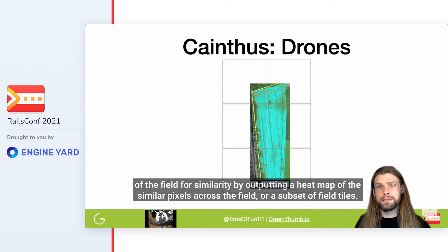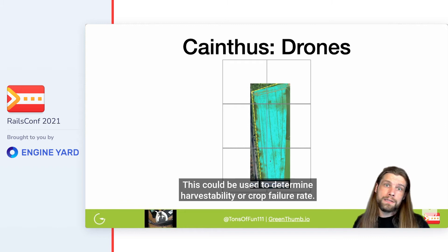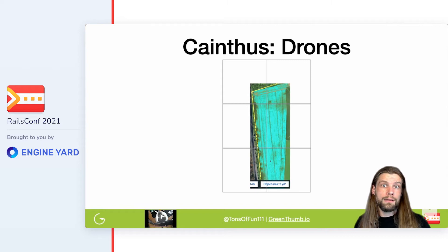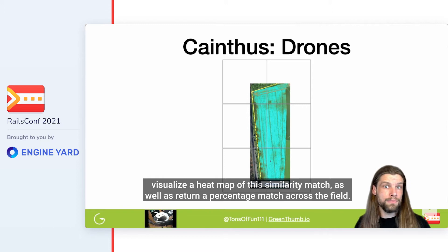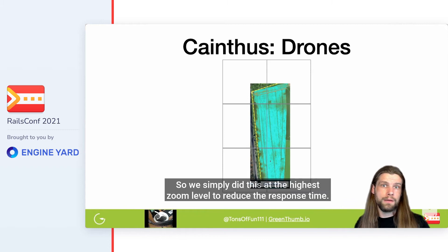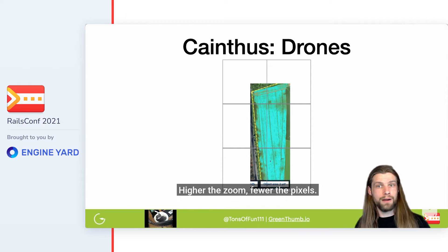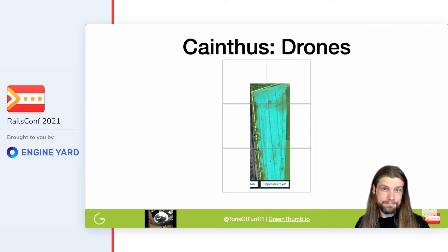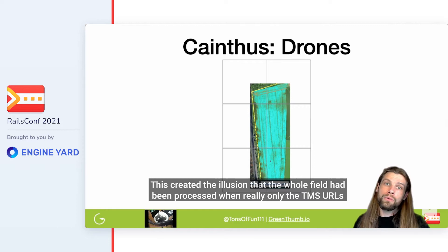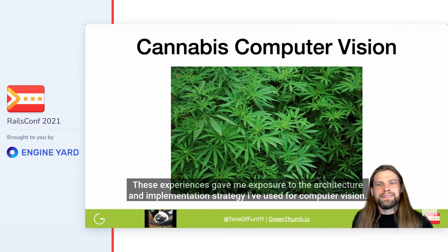By outputting a heat map of similar pixels across the field or a subset of field tiles, this could be used to determine harvestability or crop failure rate. The business logic required tiles to be processed at render time as TMS image URLs to visualize a heat map of similarity match and return a percentage match across the field. We simply did this at the highest zoom level to reduce response time — higher the zoom, the fewer the pixels. We also processed heat maps only for tiles in the current viewport, creating the illusion that the whole field had been processed when really only the TMS URLs requested by Leaflet were processed on demand.